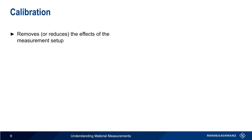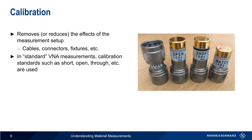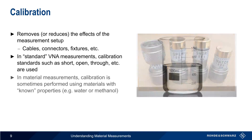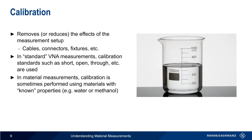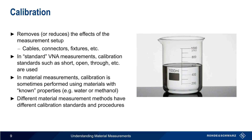Another important topic when using VNAs for material measurements is calibration. Since we're not connecting our sample directly to the ports of our VNA, we use calibration to remove, or at least reduce, the influence of the measurement setup, such as cables, connectors, fixtures, etc. In standard VNA measurements, calibration is usually performed using a set of calibration standards, such as short, open, through, etc. In material measurements, calibration is sometimes also performed using materials with known dielectric properties, such as water or methanol. Each of the different methods used to make material measurements have different calibration standards and procedures in order to obtain accurate results.